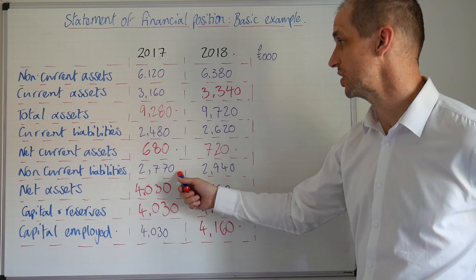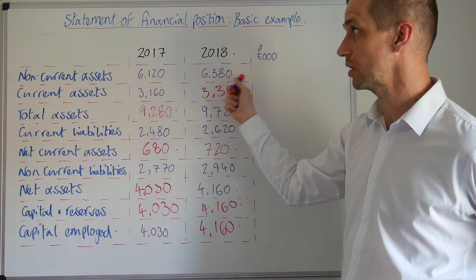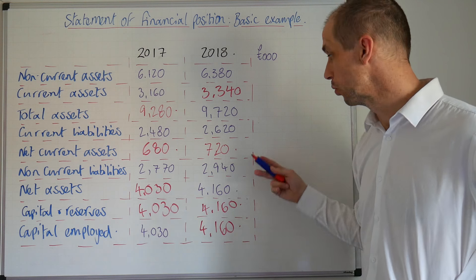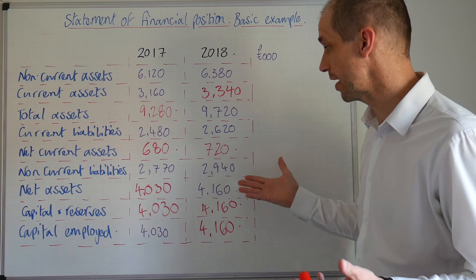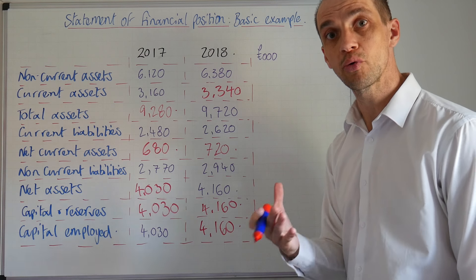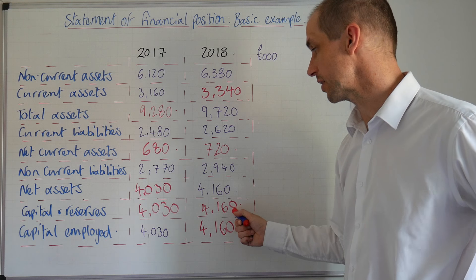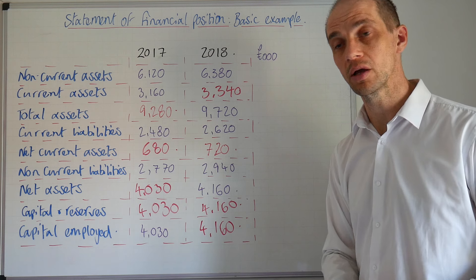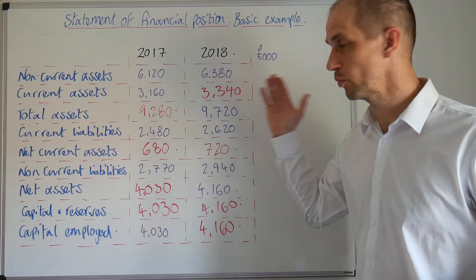We can see non-current liabilities — their borrowing has also increased. Perhaps they are financing the increase in buildings and machinery via an increase in borrowing. This means they're now more susceptible to interest rate changes and more vulnerable, which will have cost implications on their income statement. However, the net assets show that the overall value of the business has increased, which is certainly positive. Working through to capital and reserves, we see 4,030 increasing to 4,160 year on year — there is more capital employed in this business and it certainly seems to be growing, but it is taking on much more debt. Does it have too much tied up in inventories? We can't be sure, but we could certainly write about that.